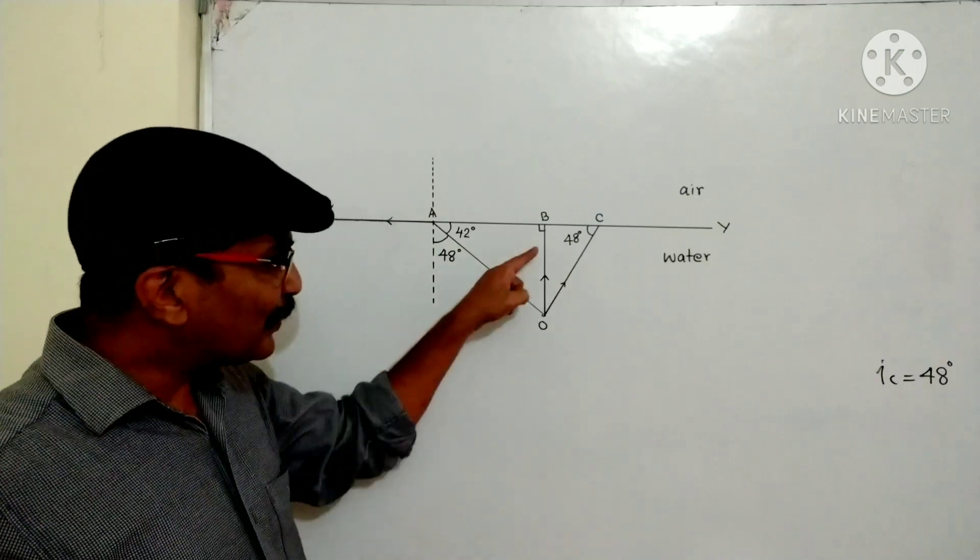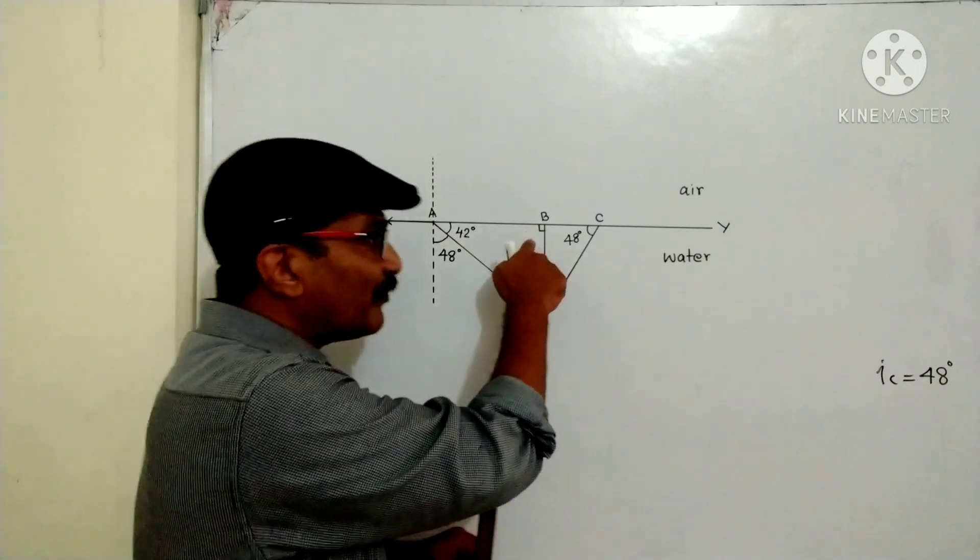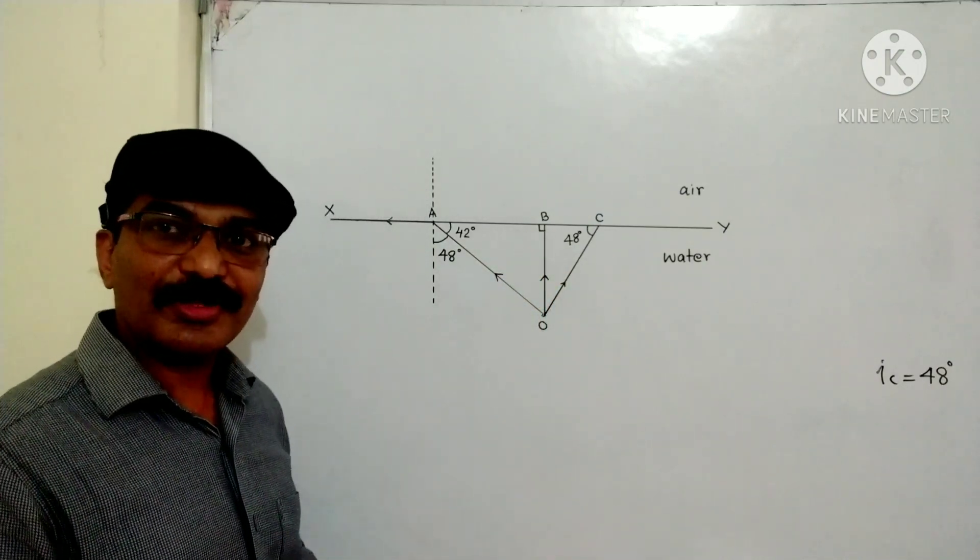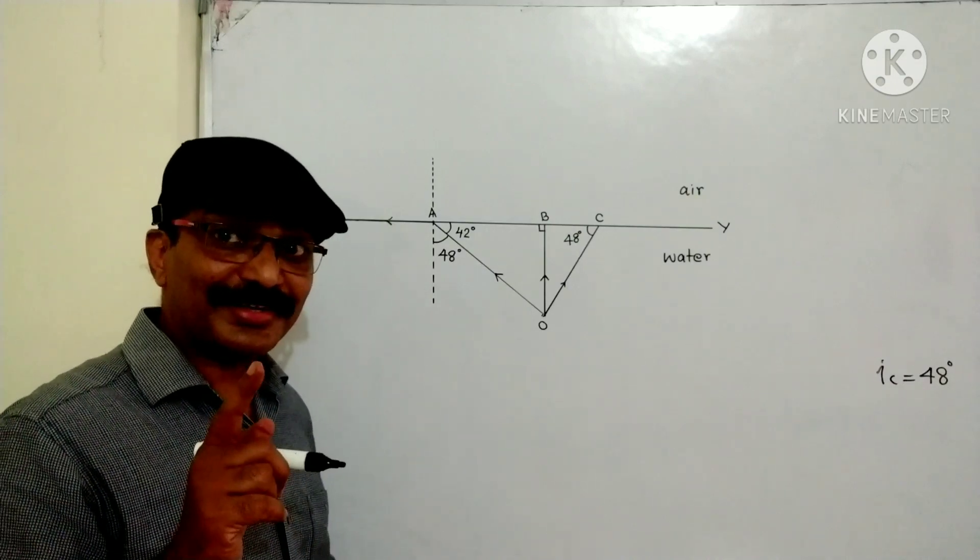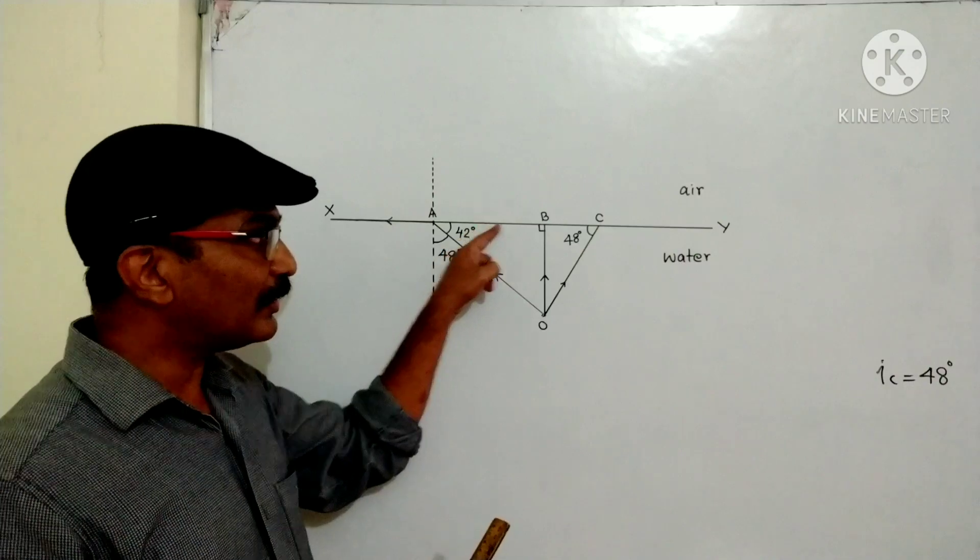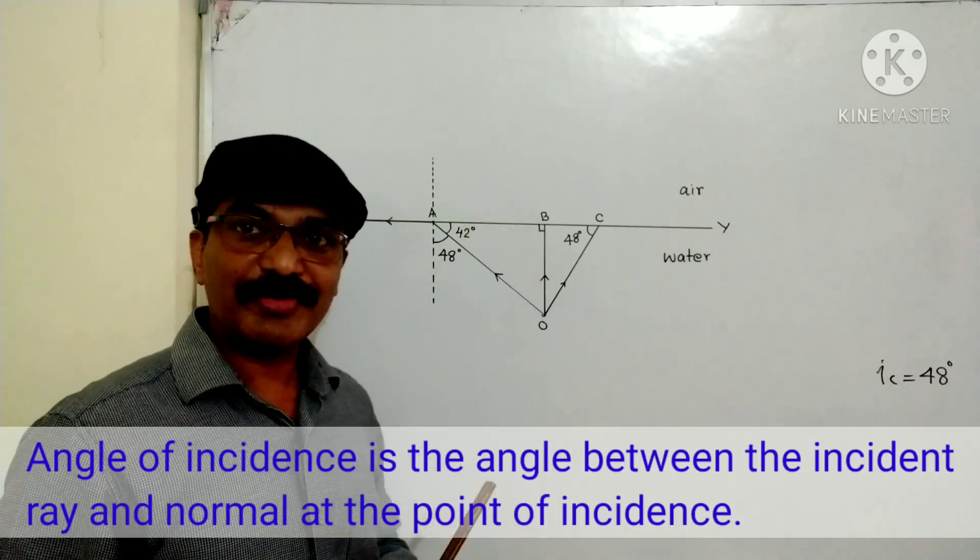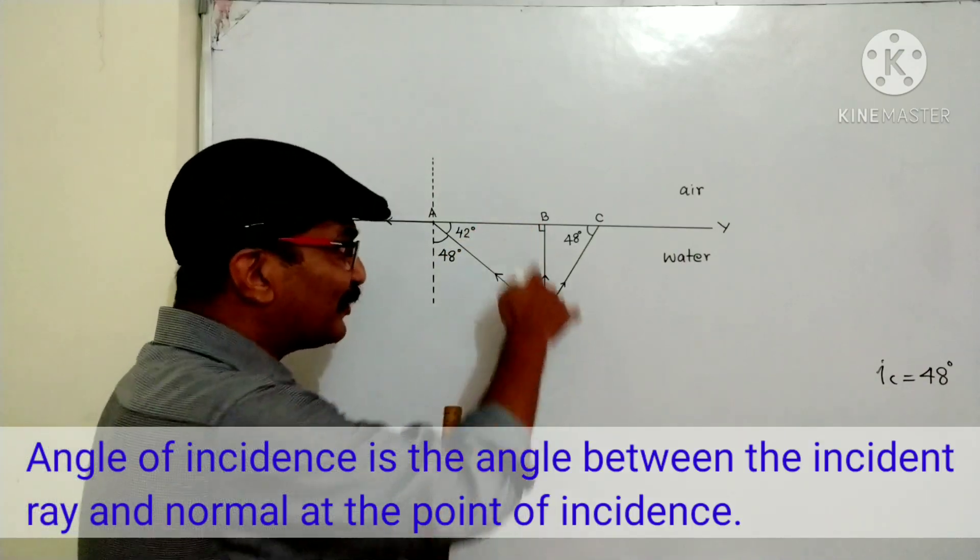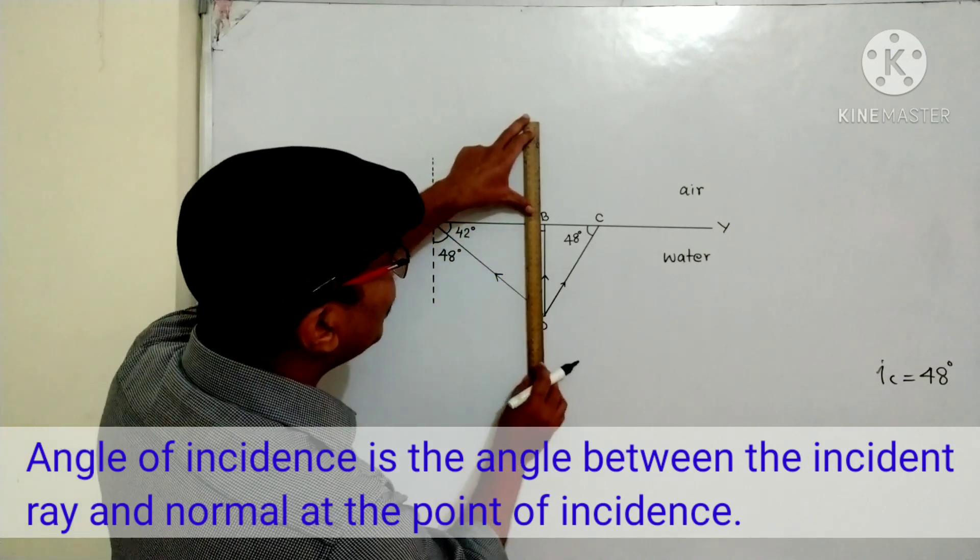Now, what about this? Here, the angle of incidence. What is the angle of incidence? Not 90 degrees. 90 degrees is the angle between incident ray and refracting surface. Angle of incidence is the angle between incident ray and normal.